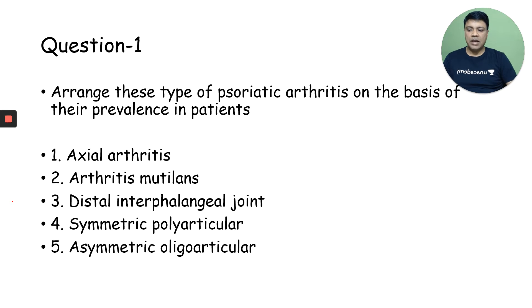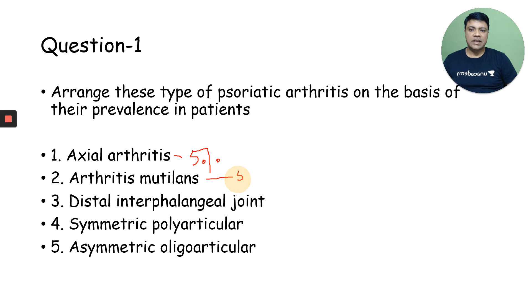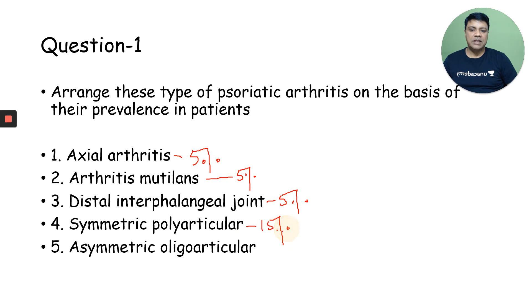Coming to the answer: axial arthritis is in the tune of 5% in patients. Arthritis mutilans is again in the tune of 5% in patients. Distal interphalangeal joints is again in the tune of 5% in patients. Symmetrical polyarticular is seen in the tune of 15% in patients. And the majority of patients have asymmetrical oligoarticular arthritis, that is around 70% of patients.